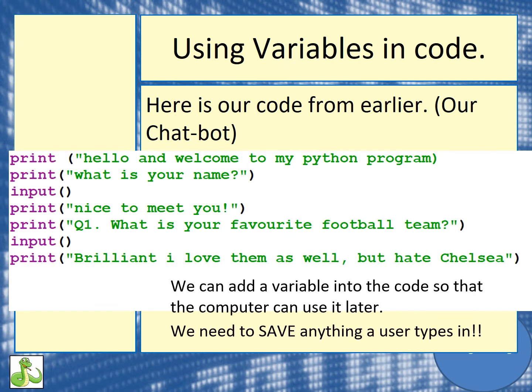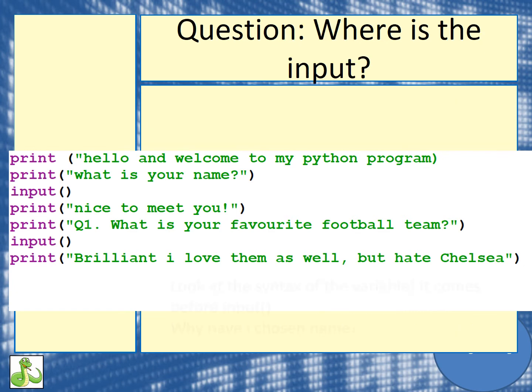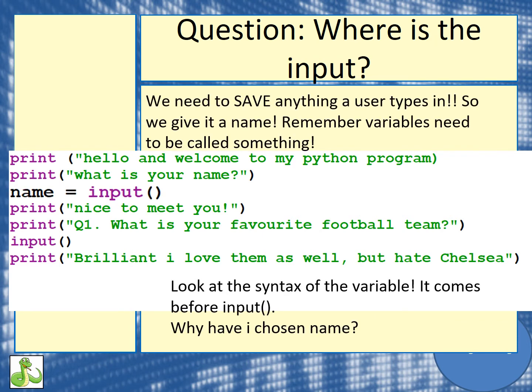So here's our code from last week — we made a mini chatbot. Remember, we've got a series of inputs and outputs here. The green are the outputs, and where it says input, that's where the user can type something in. Now when we ask them what's your name and they type something in, at the moment we can't use this again in the future. But using a variable, we could use what they've typed in again.